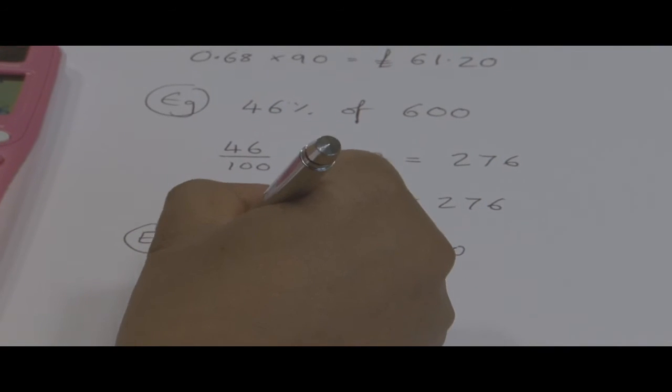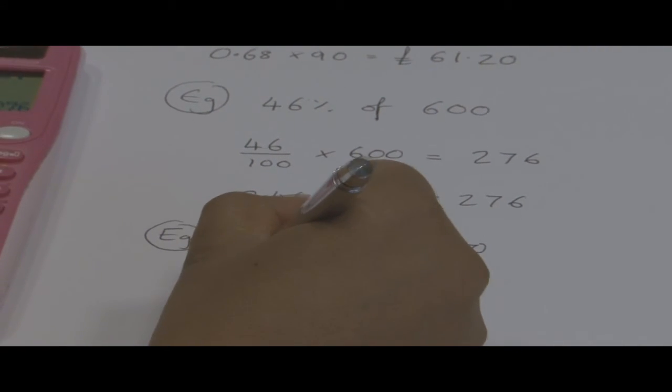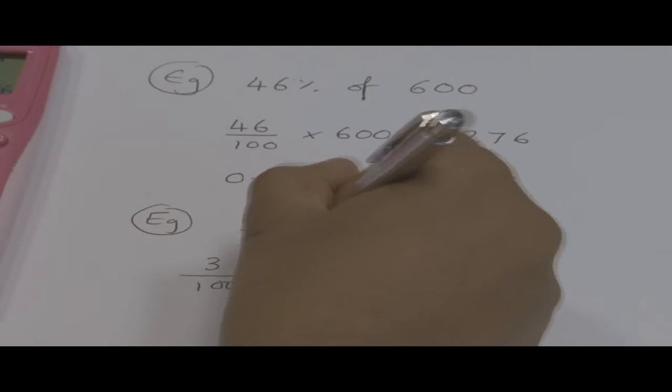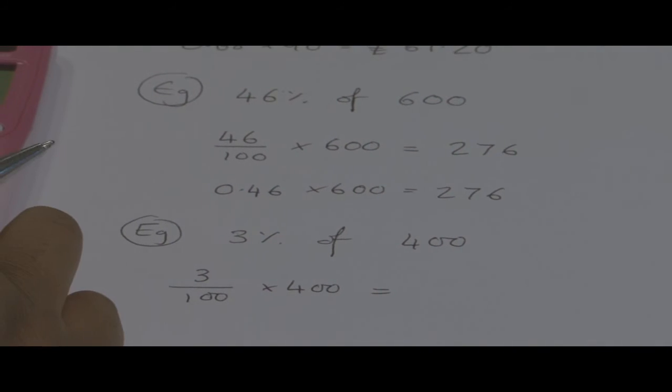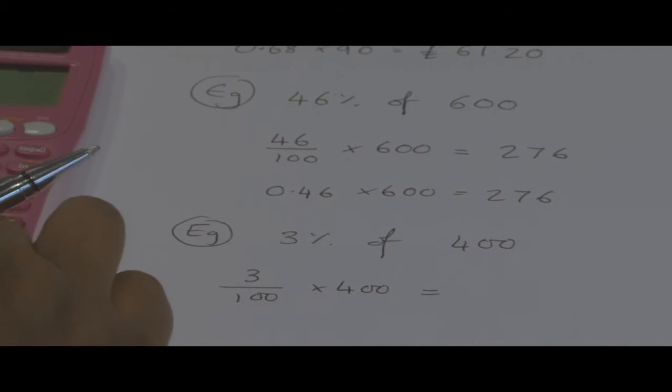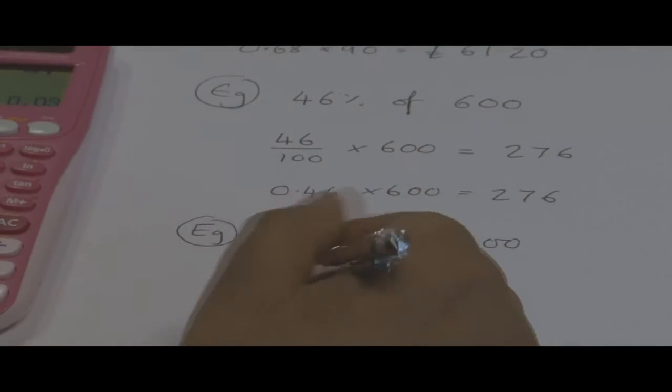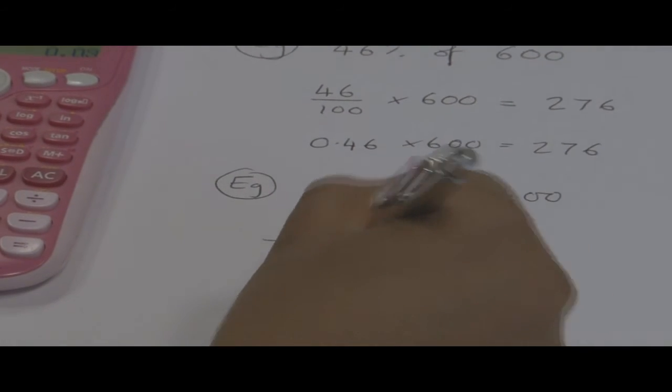So we still do 3 over 100, because percent means out of 100, times by the amount, so we do 3 divided by 100, which as a decimal is 0.03.